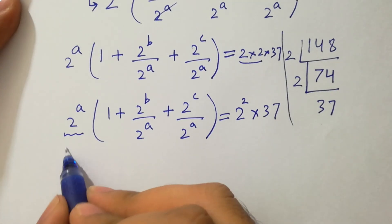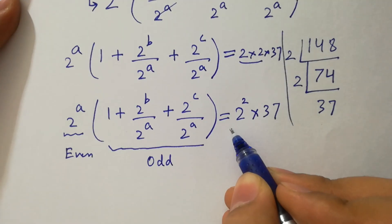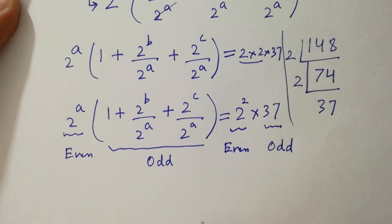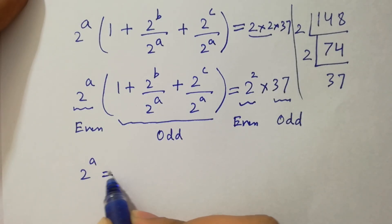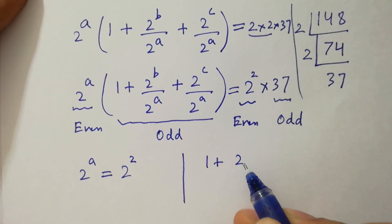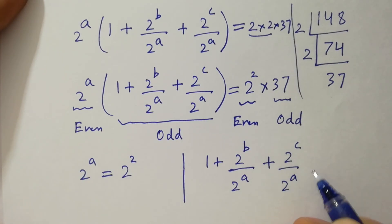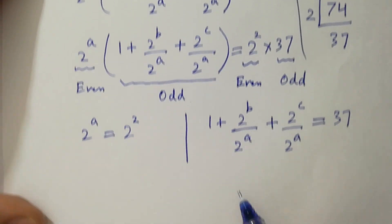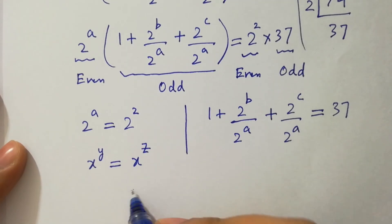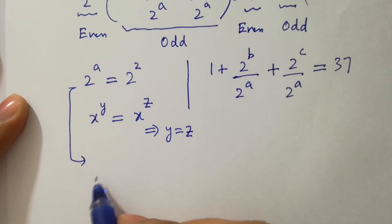Here, 2 to the power a is an even number and 37 is an odd number. 2 to the power 2 is an even number and 37 is an odd number. So by comparing both sides we have 2 to the power a equal to 2 to the power 2, and 1 plus 2 to the power b over 2 to the power a plus 2 to the power c over 2 to the power a equal to 37.